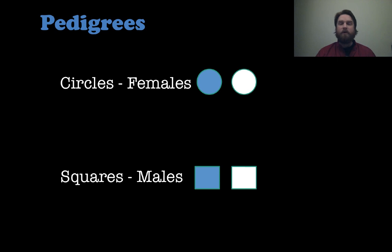So first, circles are used to represent females, either shaded circles or unshaded circles, and squares are used to represent males.